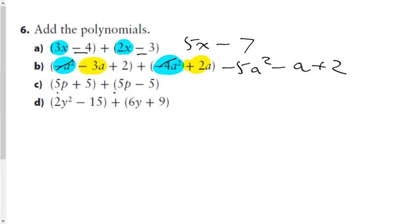5p and 5p make 10p. Positive 5 and negative 5 make 0, so that binomial added to that binomial makes a monomial — a single term of 10p.